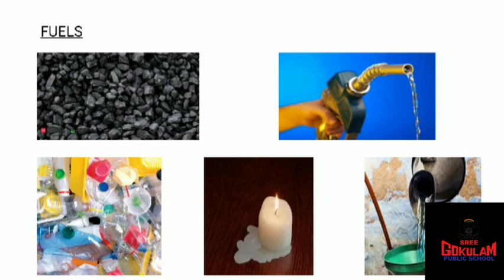Another substance obtained from petroleum is plastic. Plastic is used to make bottles, toys, bags, and ropes. In this chapter we learned about things we get from nature — from animals and plants we discussed wool, fiber, leather, rubber, timber, and bamboo; and from the earth we discussed rocks, soil, and fuel.